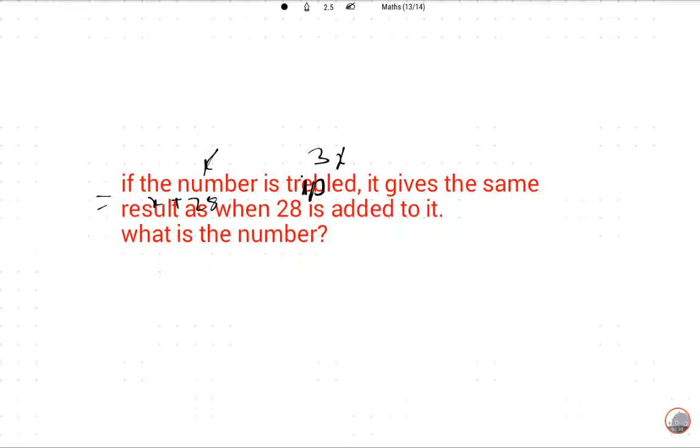We will make the corresponding equation. The number is tripled, then it gives the same result as when 28 is added to it. So this is the equation: 3x equals x plus 28.